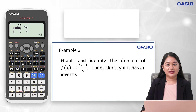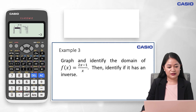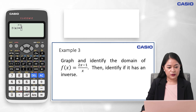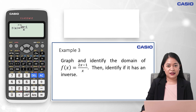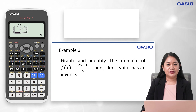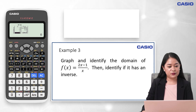Let's try another example. Again using the table menu of KASHA ClassWiz, input the given function by pressing the following: press AC, then the fraction button, input 2x − 1 in the numerator, press the right arrow key and then x for the denominator, then press the equal sign twice. Observing the table of values, for x = 0, f(x) shows an error. This means that 0 is not part of the domain — that is, the domain is the set of real numbers except 0. To graph this function, press Shift and then Option.